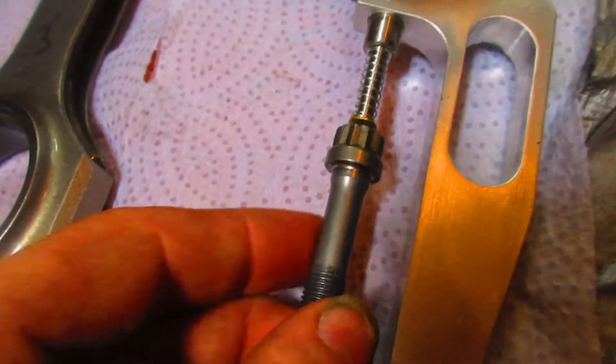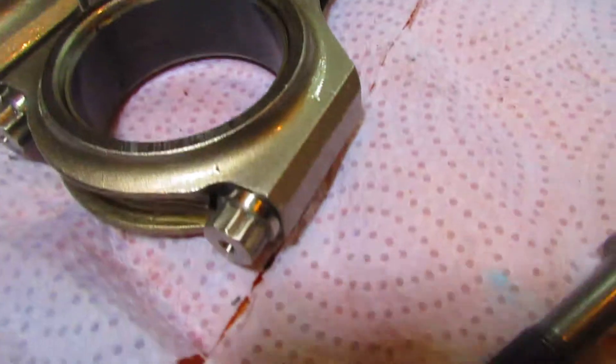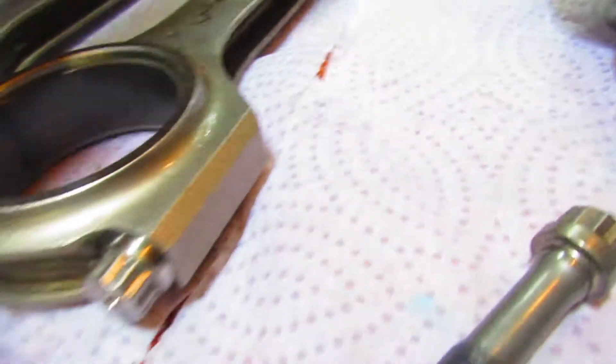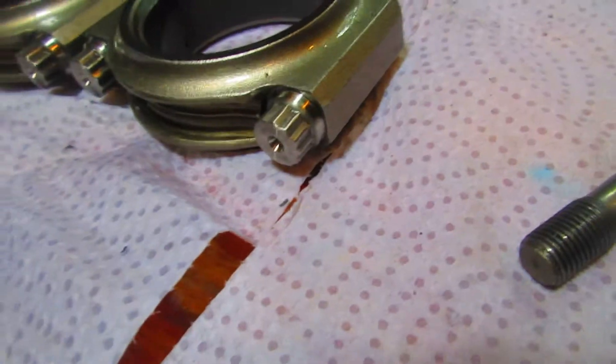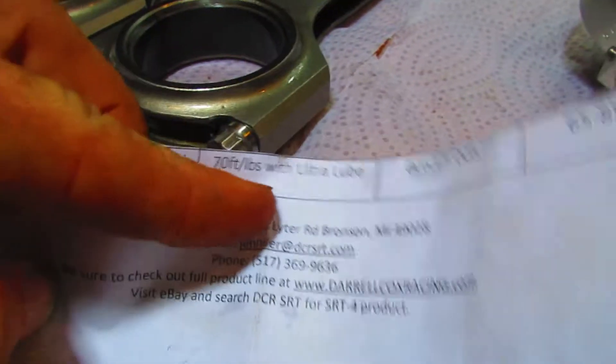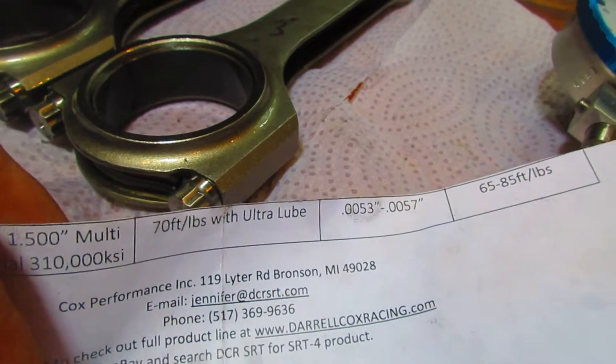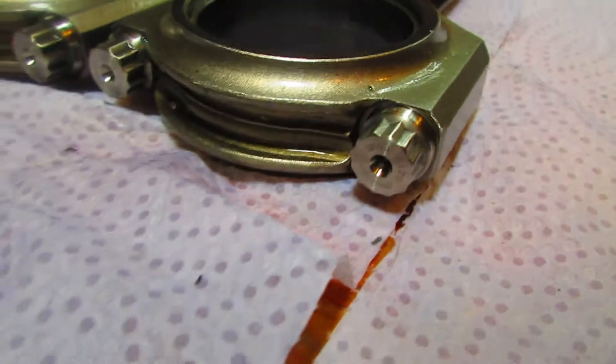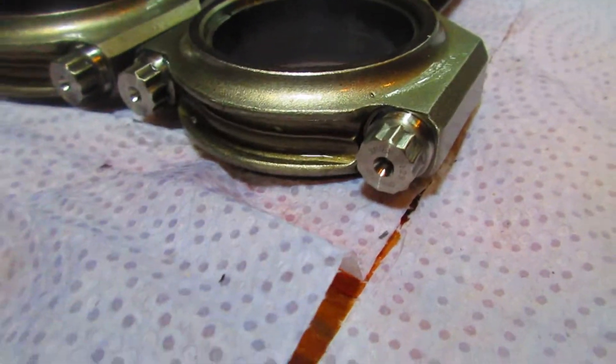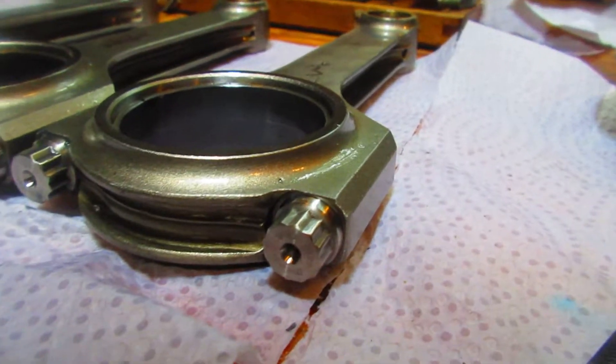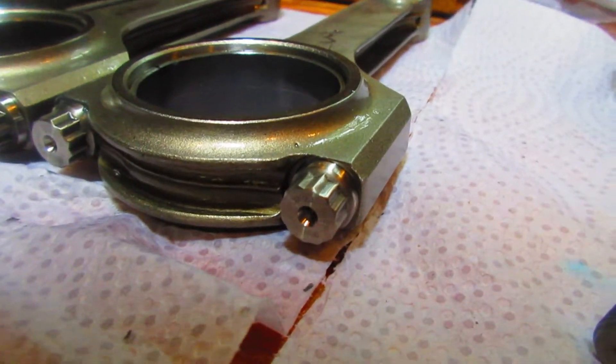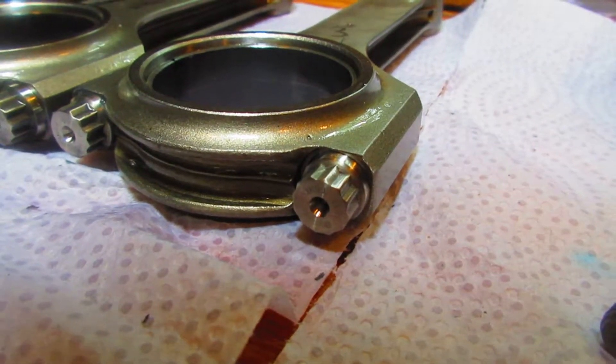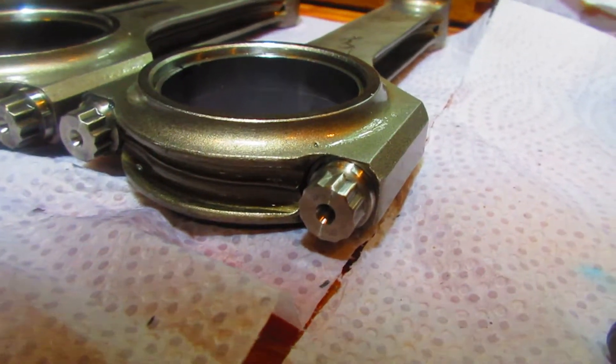And then when you install the bolt into the connecting rod and torque it to the spec that you're given. So, I ended up going with 65 foot pounds and I got my five and a half thousandths stretch on the bolt. And what that means is the bolt is at its optimal clamping load because if you just go off of what the torque wrench is giving you, then you don't know how much that bolt is stretched.